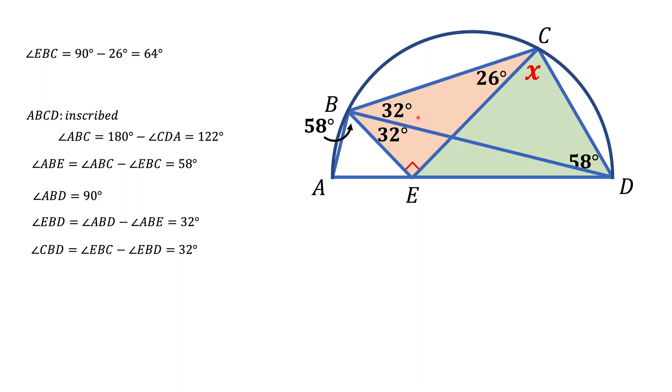That's all we can do with this semicircle by connecting different vertices. Now let's complete this circle and extend line BE until it becomes line BF. Then we'll connect point F to points D and C.